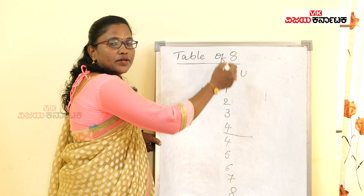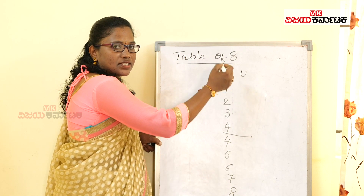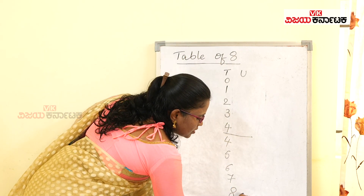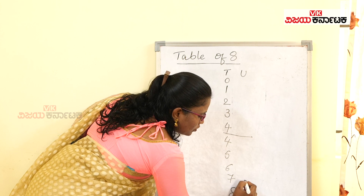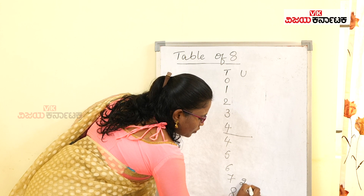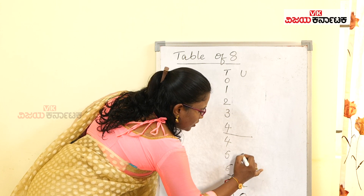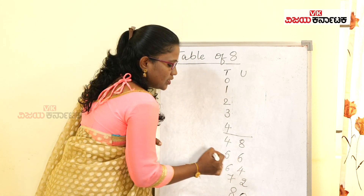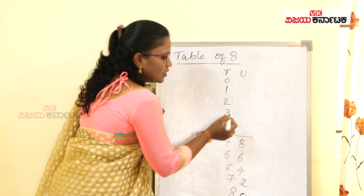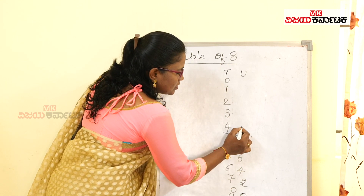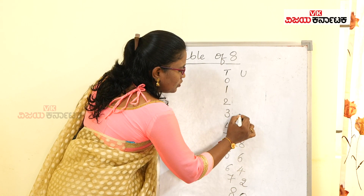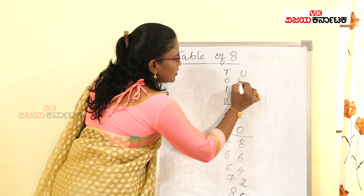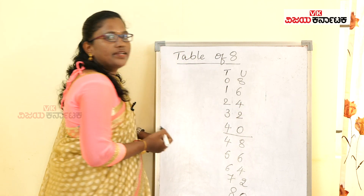The unit place goes 0, 2, 4, 6, 8 — and then repeats again: 0, 2, 4, 6, 8. So the unit place always follows the even number sequence.